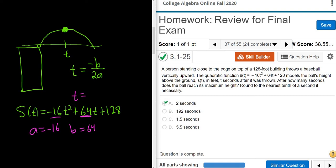So t is equal to negative 64 over 2 times negative 16. So that's going to be negative 64 over negative 32, so that's just 2, so it's going to take 2 seconds.